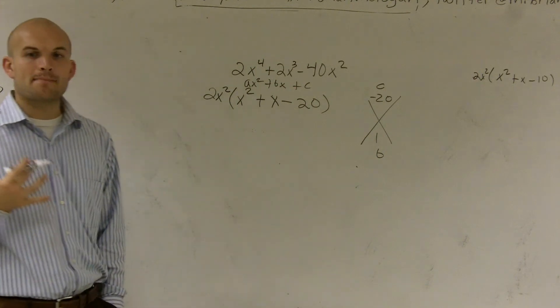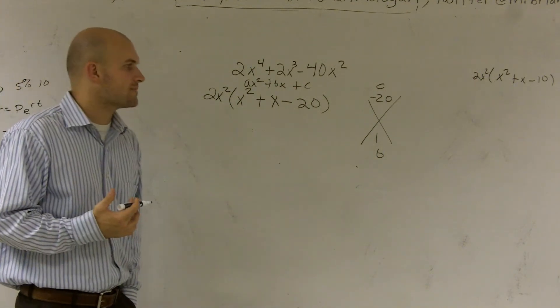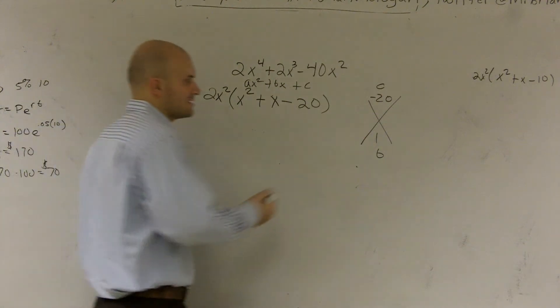I say, is there any two numbers that multiply to give me negative 20, but then add to give me 1? And you can say yes.